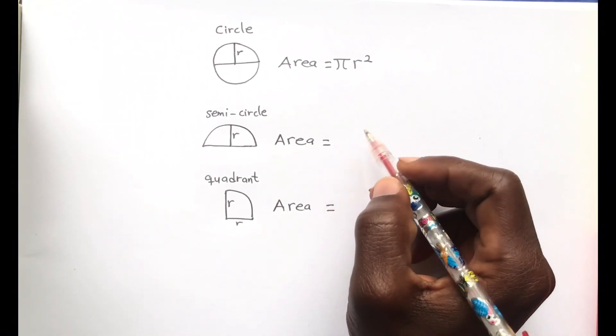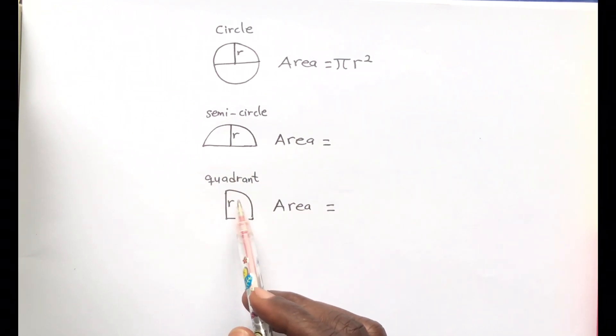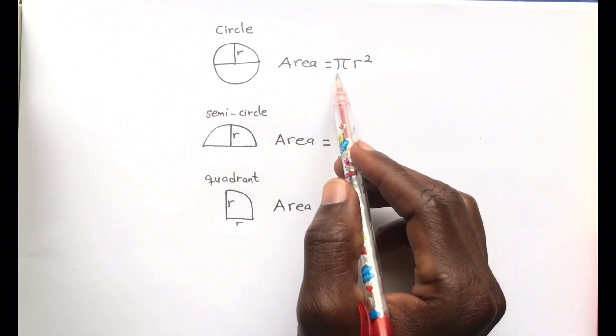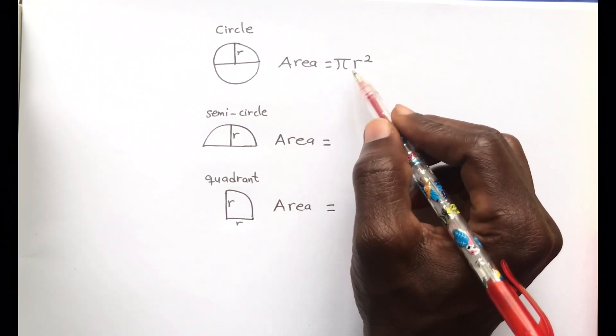We are asked to find the area of a semicircle and then a quadrant when given the area of a circle. So the area of a circle is given by pi r squared.